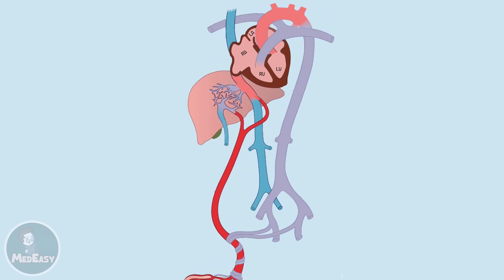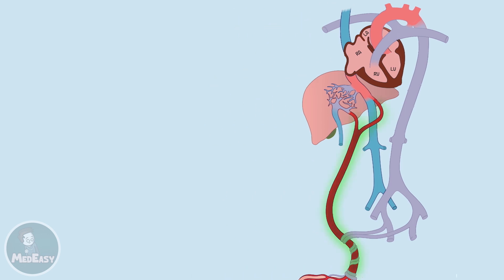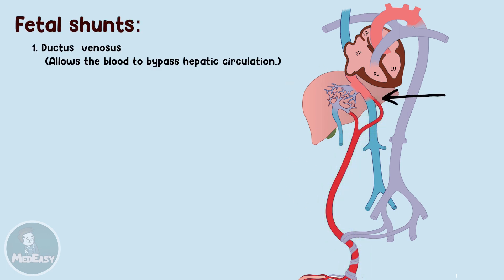This is a diagram of the fetal circulation. First, the umbilical vein carries the oxygenated blood from the placenta, and most of it is conducted to the inferior vena cava through a shunt called ductus venosus. This shunt allows the blood from the umbilical vein to bypass the liver. However, a small amount of this blood still enters the liver's sinusoids to supply and nourish the liver.